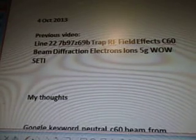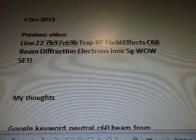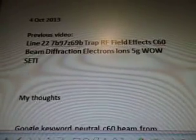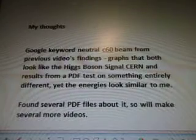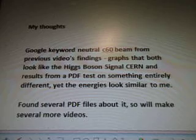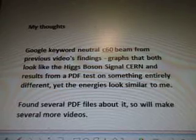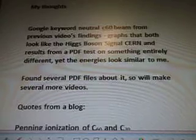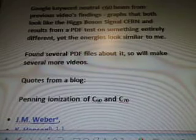The previous video we talked about line 22, 7B, 97, Z69B, trap RF field effects, C60, beam diffraction electrons, ions, 5G while steady. My thoughts. So, I'm going to Google the keyword neutral C60 beam from previous video's findings. Graphs that both look like the Higgs boson signal CERN and results from a PDF test on something entirely different, yet the inner entities look similar to me. I found several PDF files about it, so I'll make several more videos.